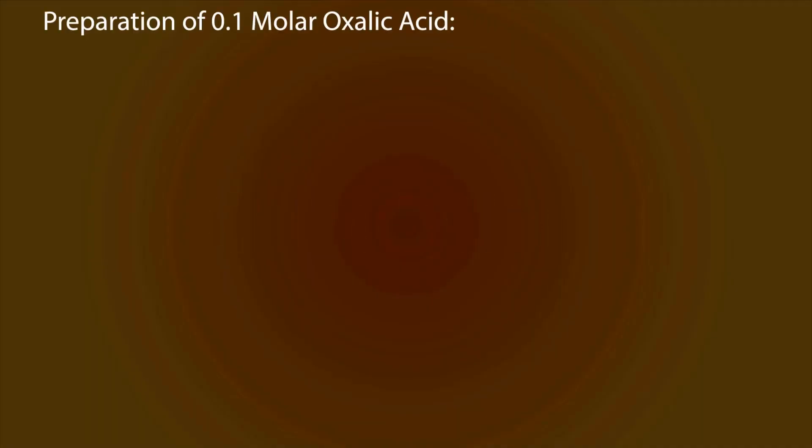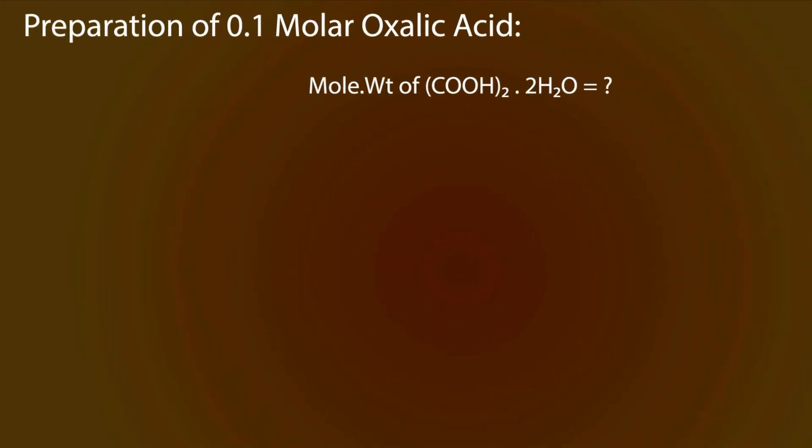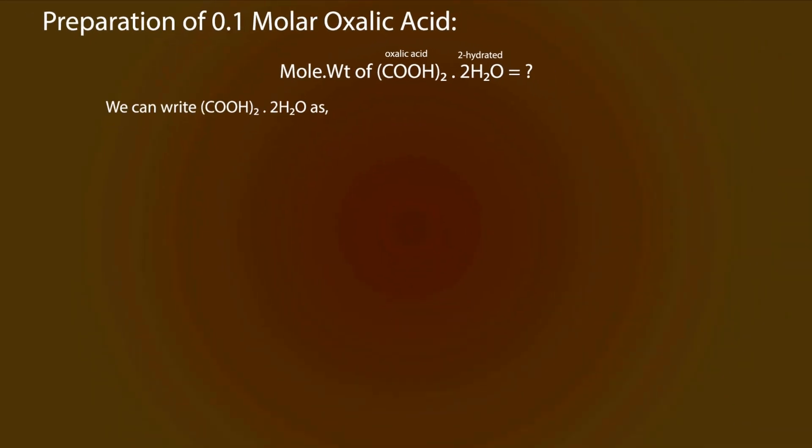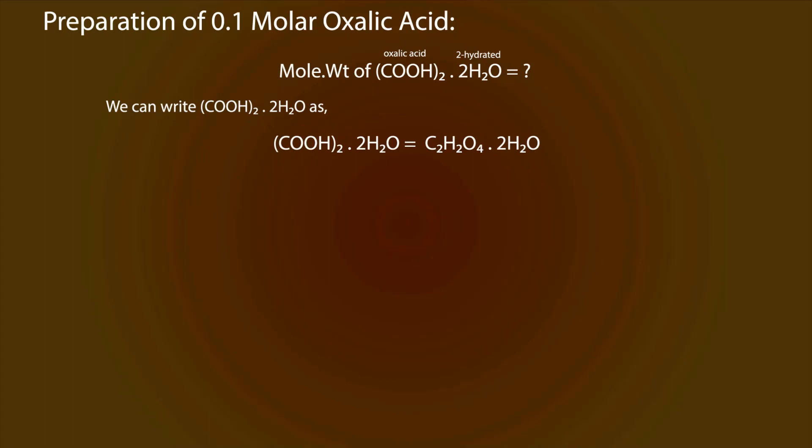Let's do some calculations. For that we have to find out the molecular mass of oxalic acid. So oxalic acid is (COOH)₂·2H₂O, which is known as dihydrate. We can write oxalic acid as follows. So let's find out the molecular mass.